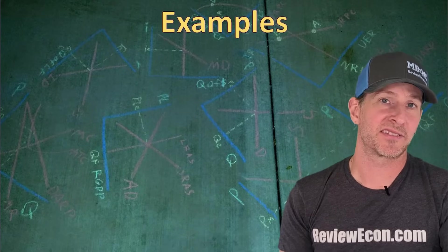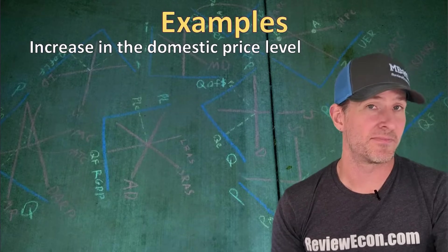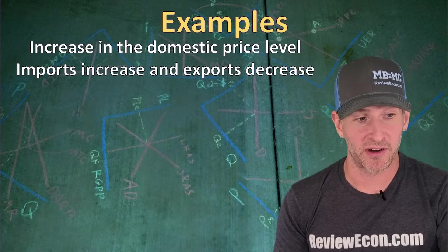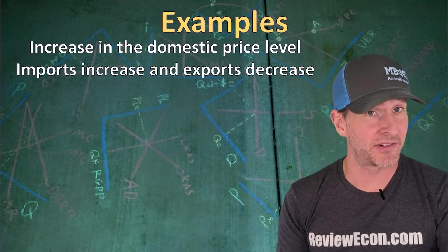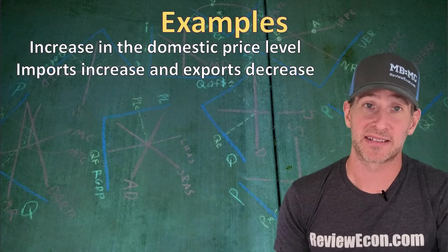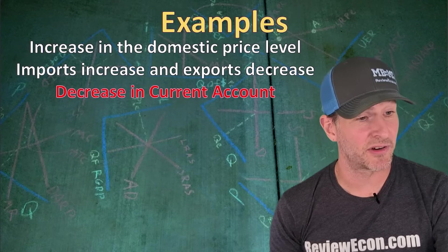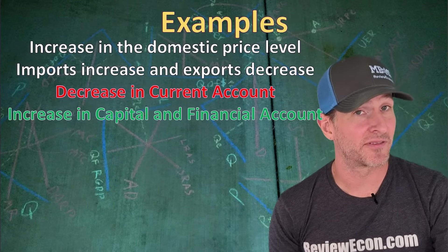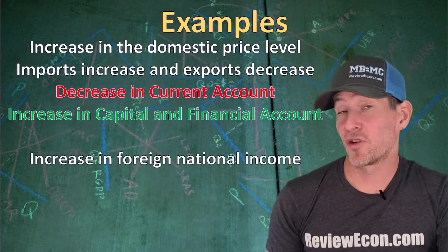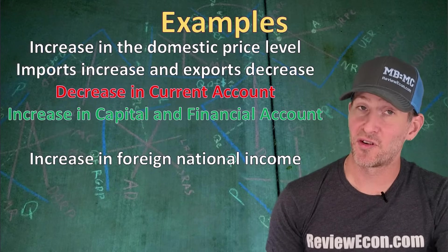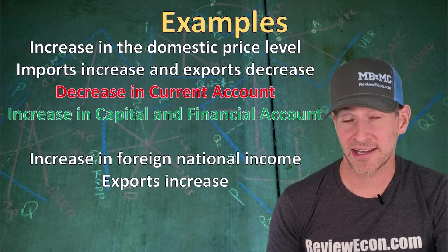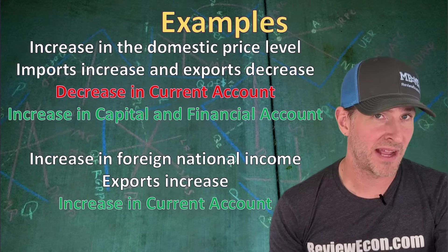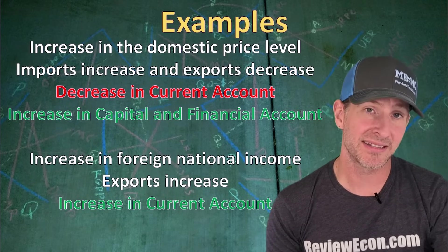Now that we know the basics of the balance of payments, let's go through some examples. If there's an increase in the domestic price level, imports are going to increase because foreign goods are now relatively cheaper, and exports are going to decrease due to higher prices for domestic goods. That increase in imports and decrease in exports is going to decrease the current account, which means we must have an increase in the capital and financial account. If we have an increase in foreign national income, foreign consumers have more disposable income, so they will increase their consumption of our exports, leading to an increase in the current account, which must be offset by a decrease in the capital and financial account.